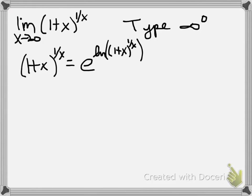Now our log rules here, since the 1 plus x is inside that set of parentheses on the natural log, will allow us to pop that 1 over x out front. So we have e to the 1 over x times the natural log of 1 plus x.